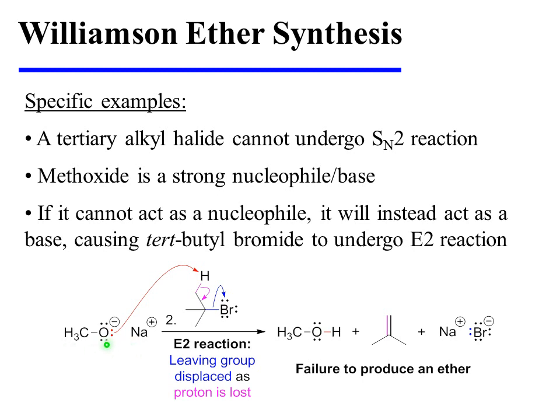Methoxide is a strong nucleophile or base. If it is unable to act as a nucleophile, it will instead act as a base, removing a proton from the beta position and thereby leading to the formation of an alkene product through E2 reaction. Notice that had we chosen methanol and tert-butyl bromide as starting materials, we would have failed to produce an ether product.